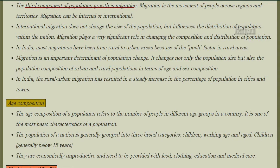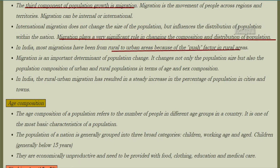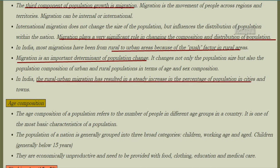The third component of population growth is migration — the movement of people across regions and territories. Migration can be internal or international. International migration doesn't change the size of the population, but it influences the distribution of population within the nation. Migration plays a significant role in changing the composition and distribution of the population. In India, most migrations have been from rural to urban areas because of push factors in the rural area. Migration is an important determinant of population change — it changes not only the population size but also the urban and rural population composition in terms of age. The rural-urban migration in India has resulted in a steady increase in the percentage of population in cities and towns.